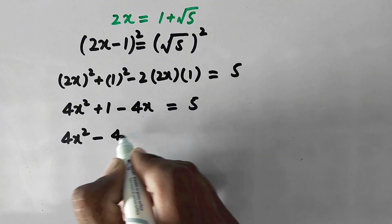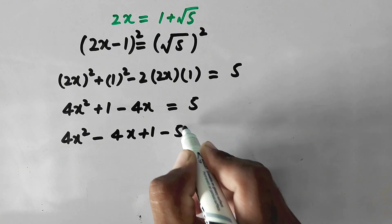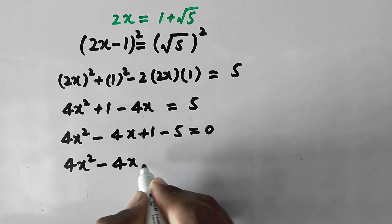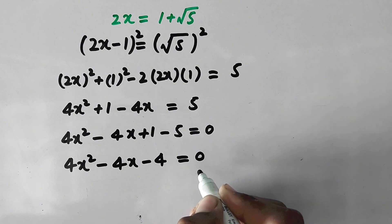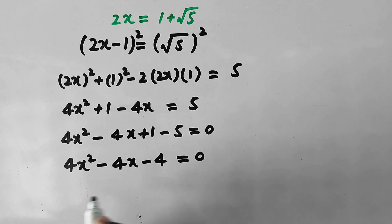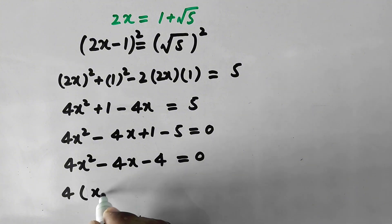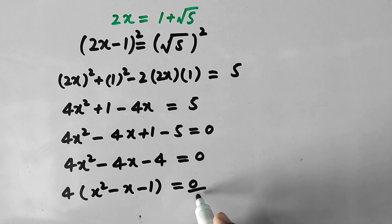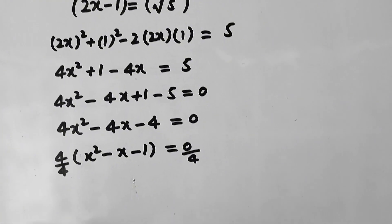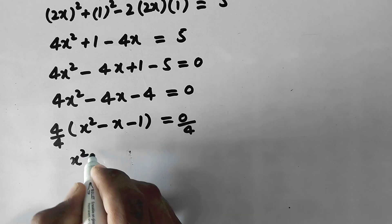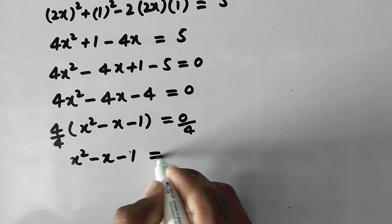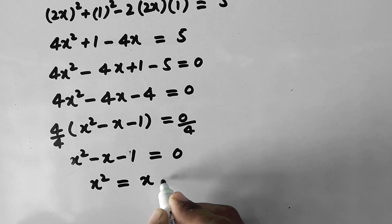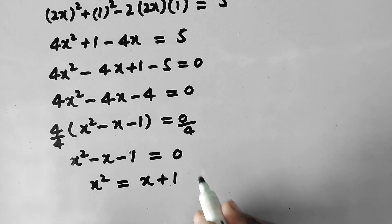So here we have 4x squared minus 4x plus 1 minus 5 equal to 0, which gives 4x squared minus 4x minus 4 equal to 0. Taking 4 as common and dividing both sides by 4, we get x squared minus x minus 1 equal to 0. Therefore x squared is equal to x plus 1.